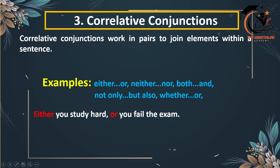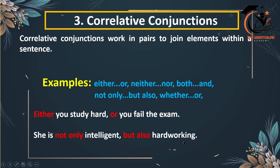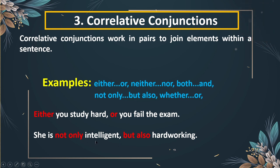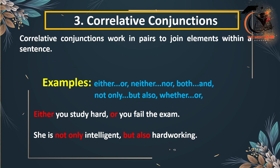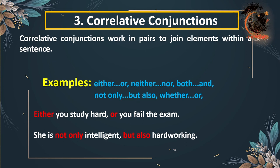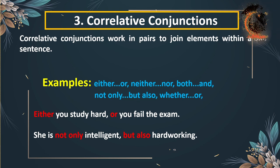The second sentence is: 'She is not only intelligent but also hardworking.' This pair combines two different qualities within a person — intelligence and hard work. So correlative conjunctions always come in pairs and they join different elements or qualities.